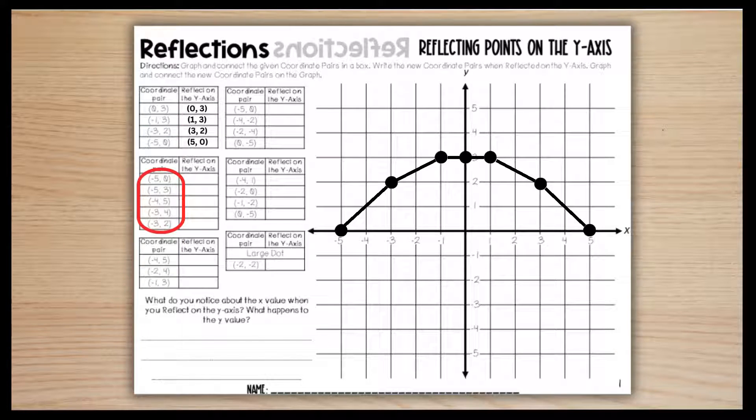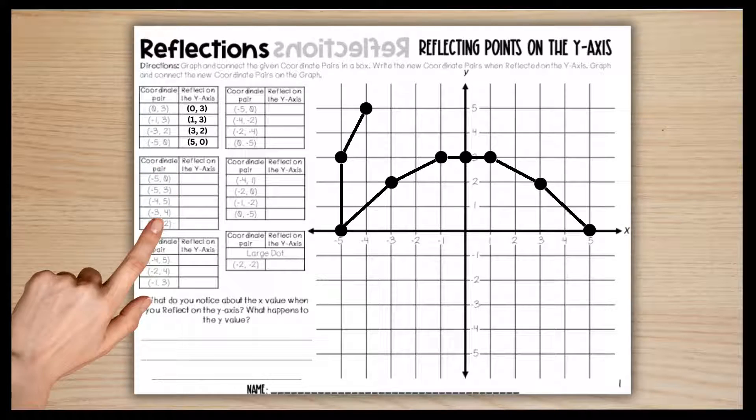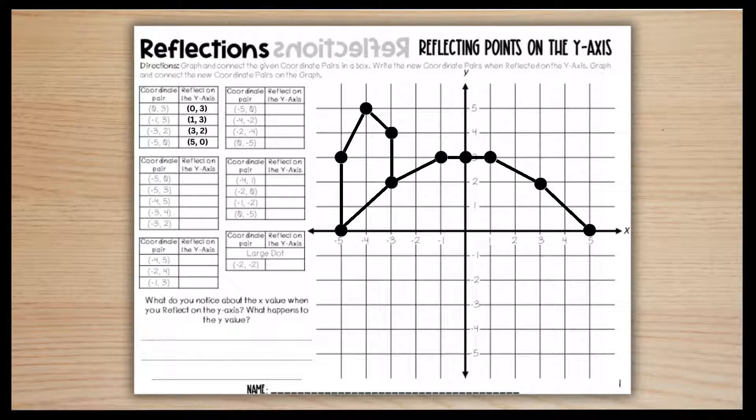Students will work on the next box below, reading the given coordinate pairs, plotting and connecting the points. Next they will find each coordinate pair when reflected on the y-axis, and now they are ready to plot and connect the reflected coordinate pairs.